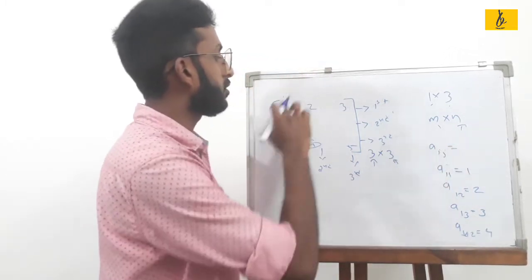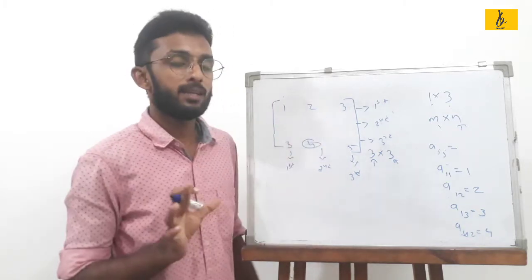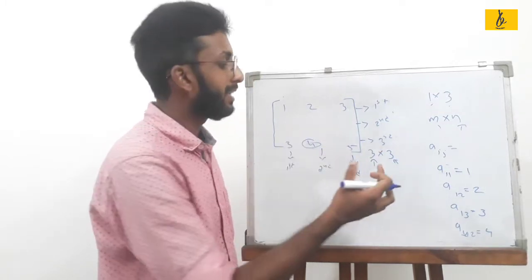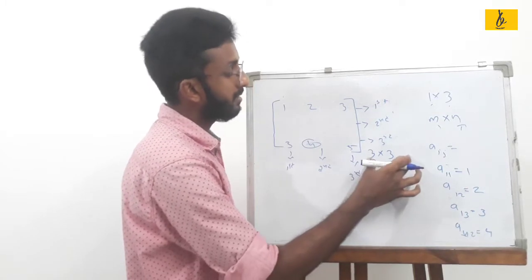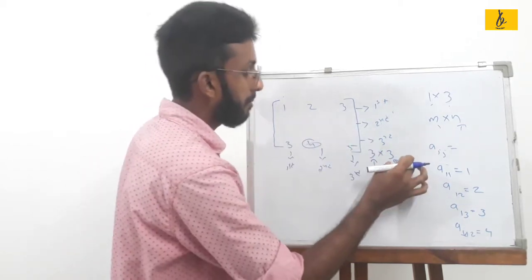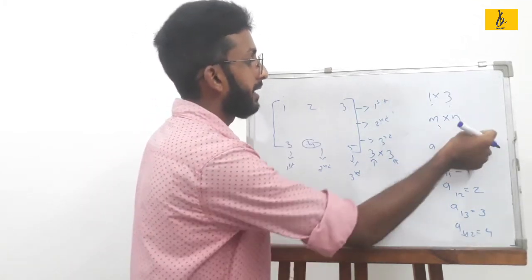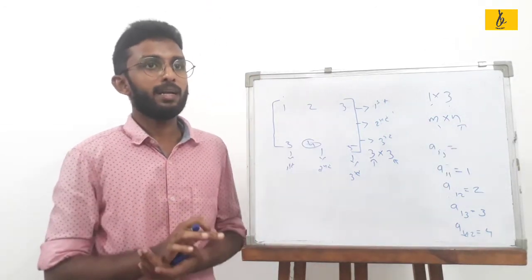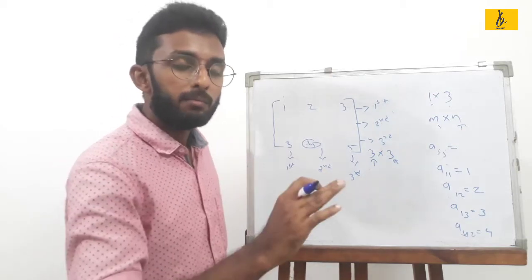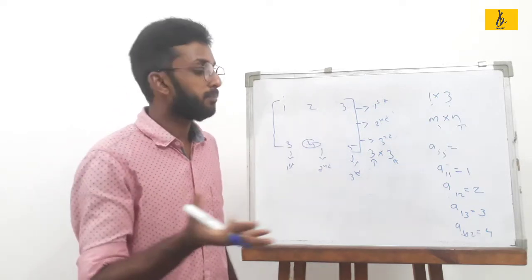If you look at this matrix, you can write down the matrix order. You count the rows and columns — for example, a 3 by 3 matrix has rows: 2, 1, 1, 7, 8, and 5, and this gives the number of columns. We arrange elements in rows and columns. The same concept is called the row of the column.